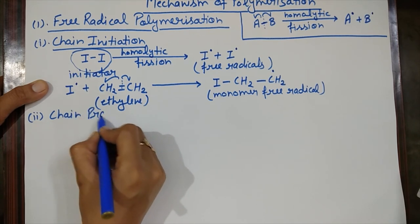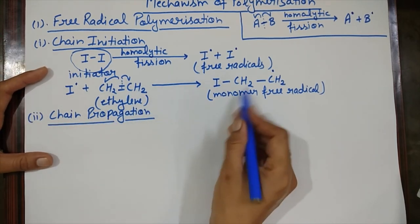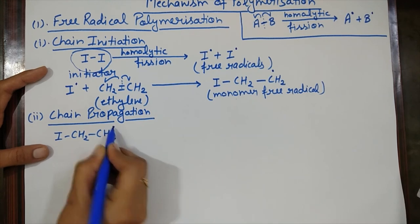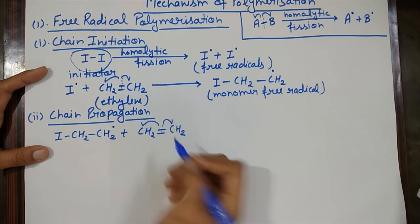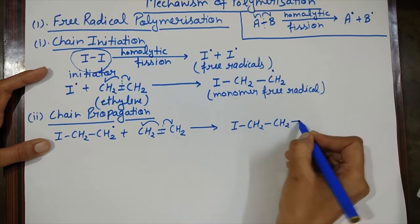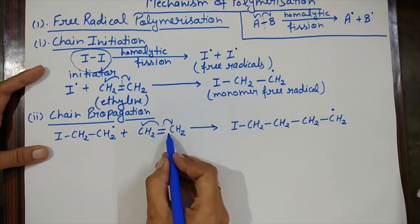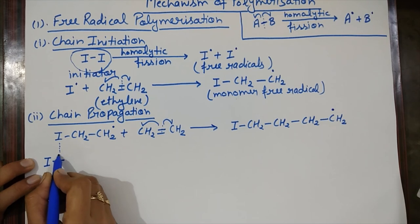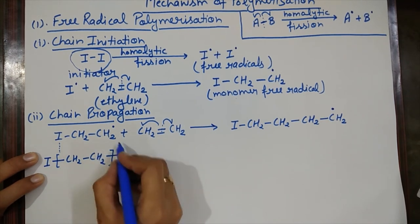The second step is chain propagation. In this step, the chain is elongated. We start with the monomer free radical I–CH2–CH2•, which reacts with another monomer unit. The pi bond breaks, an electron transfer occurs, and a new bond forms, giving I–CH2–CH2–CH2–CH2•. This process continues, adding monomer units to grow the chain.